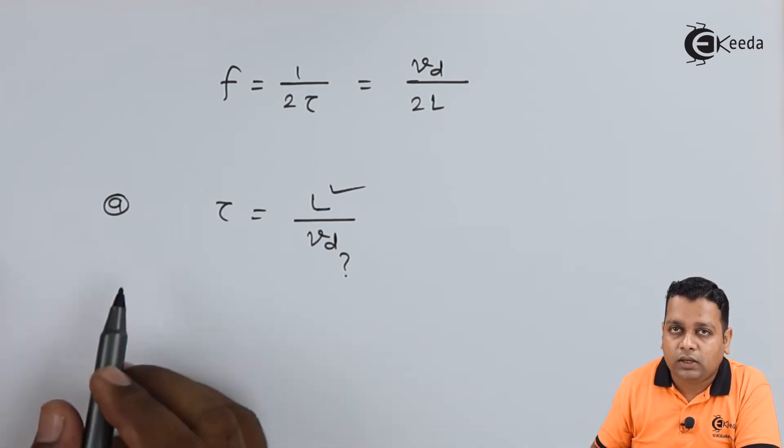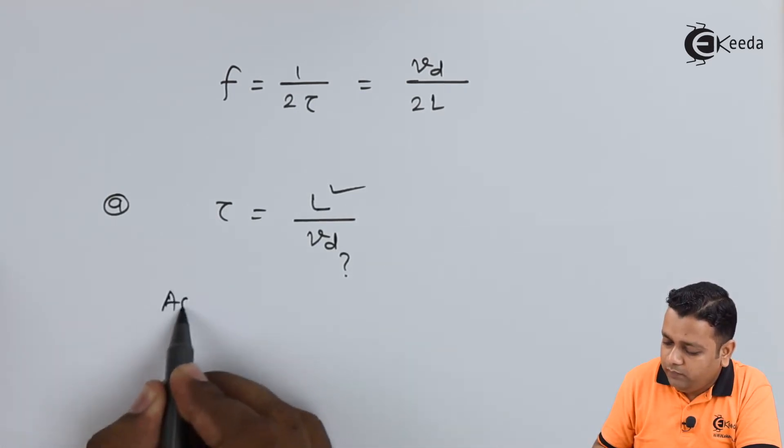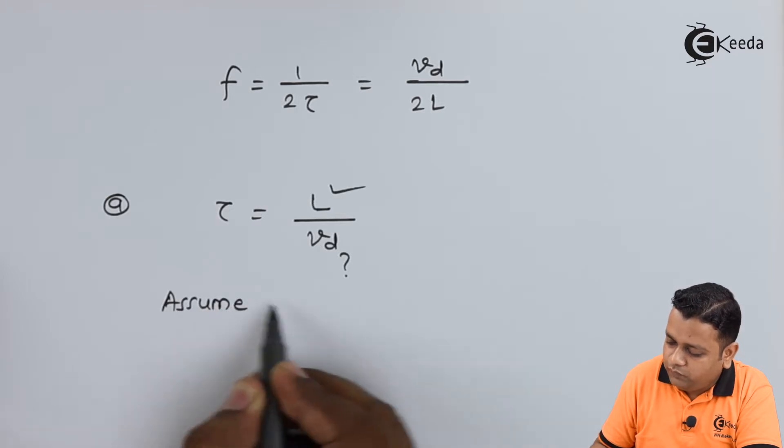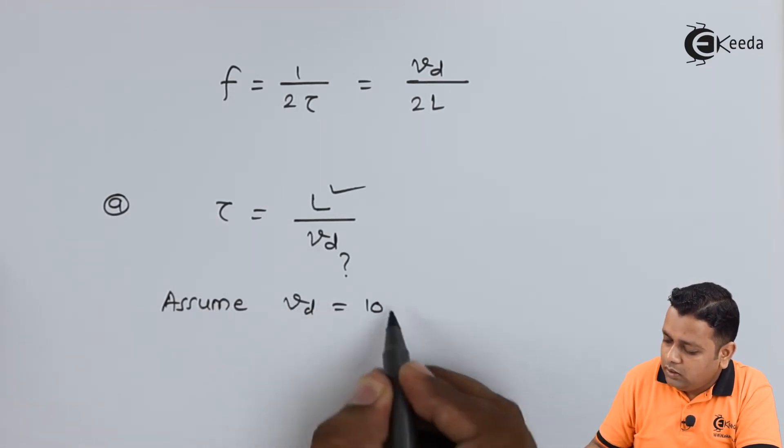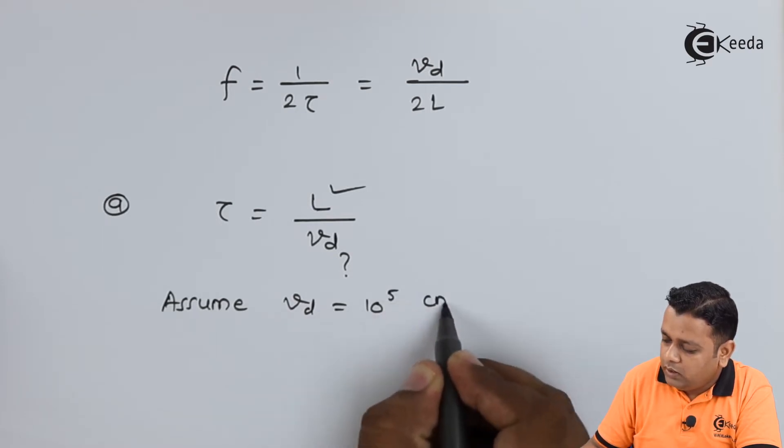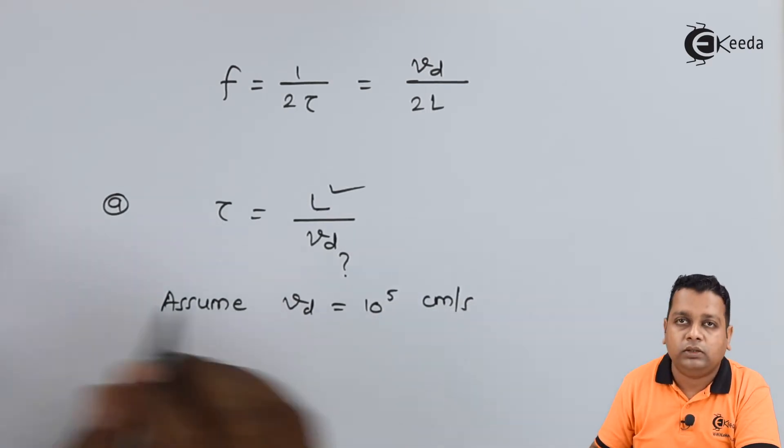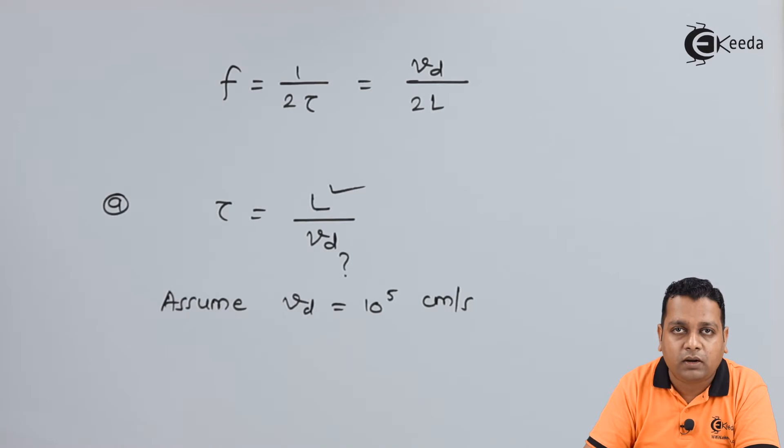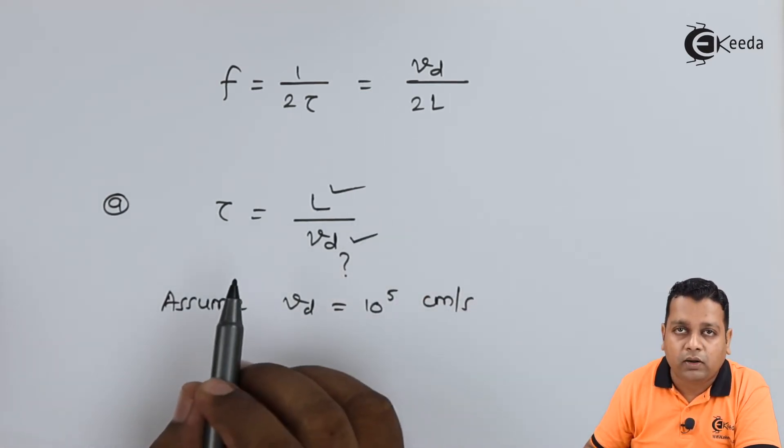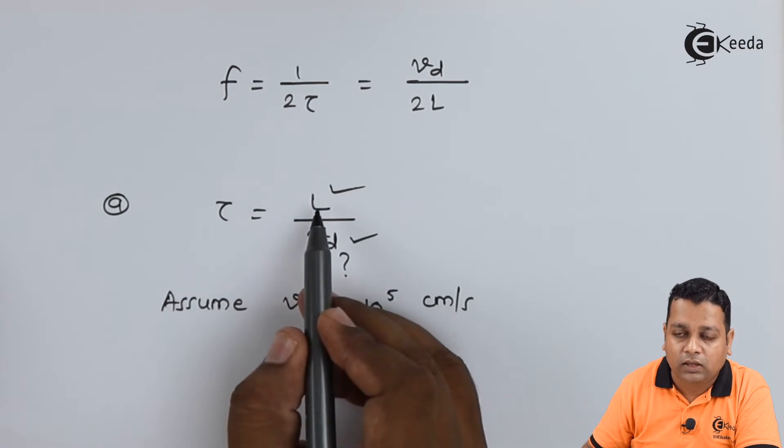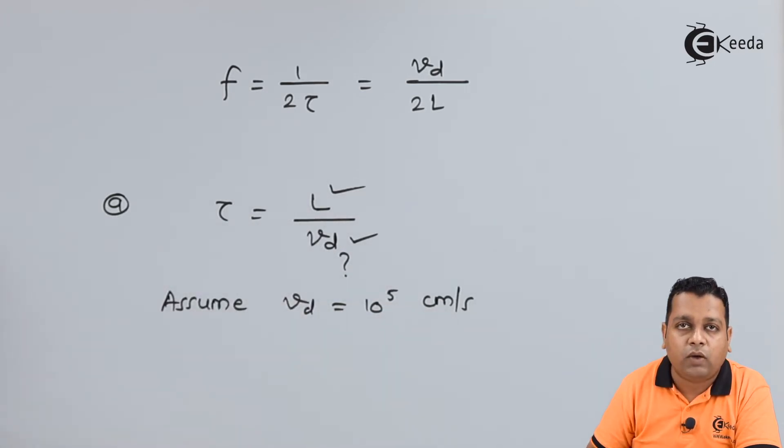So in this case, we can assume the value of Vd. The drift velocity we take to the value of 10 raised to the power 5 centimeters per second, the typical value for the IMPATT Diode. Now we can make use of drift velocity and the specimen length, finally obtaining the value of tau in terms of seconds.